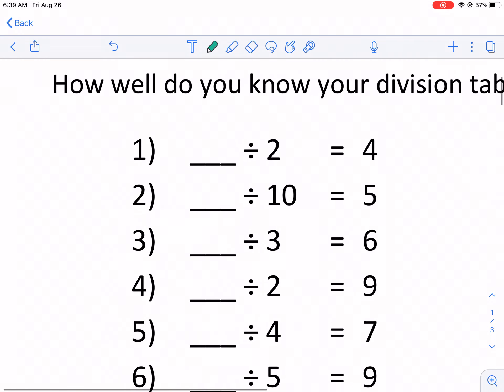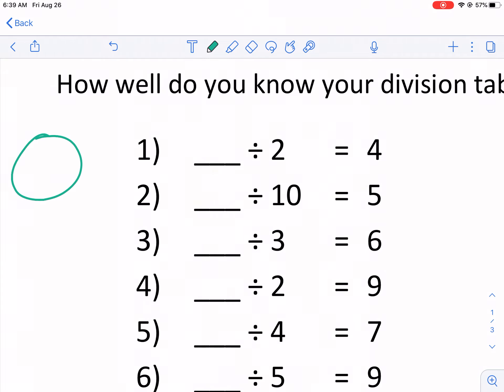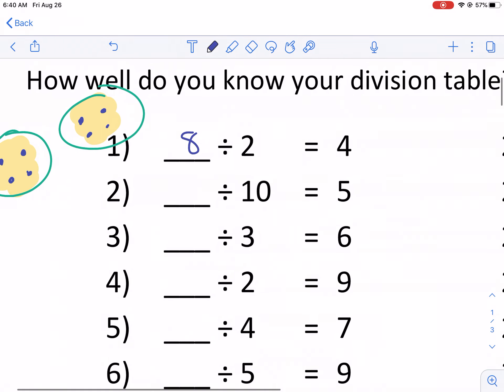If you wanted to, what you could do is you could just simply, I know I'm going to be dividing into two groups and I know I want four things in each one of those groups. So if I put four into each groups and then what I do is I just simply count the total and then that will tell me what number I started with. So I have 8, 1, 2, 3, 4, 5, 6, 7, 8, 8 divided by 2 equals 4.